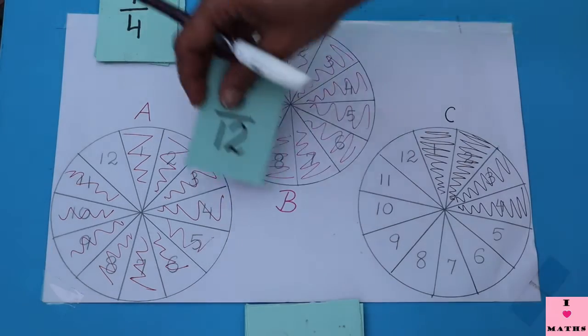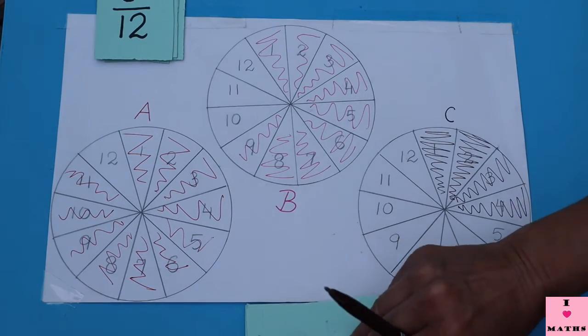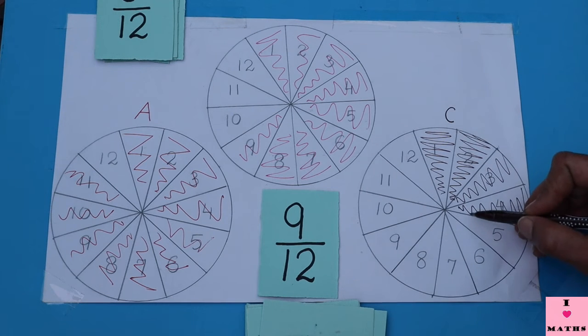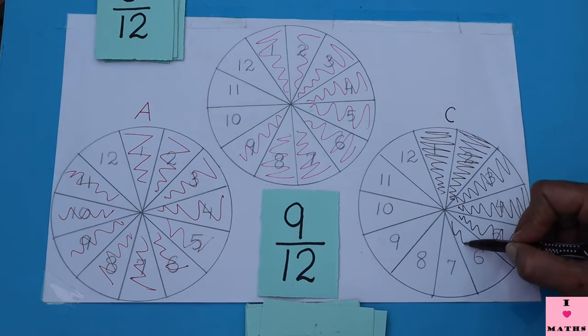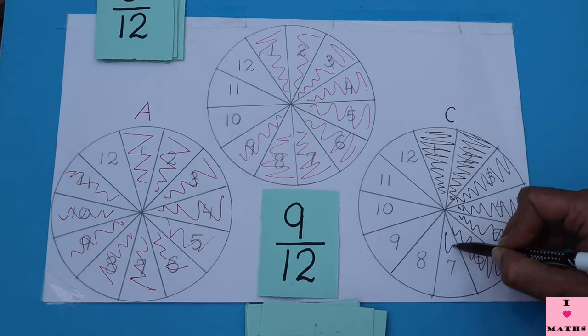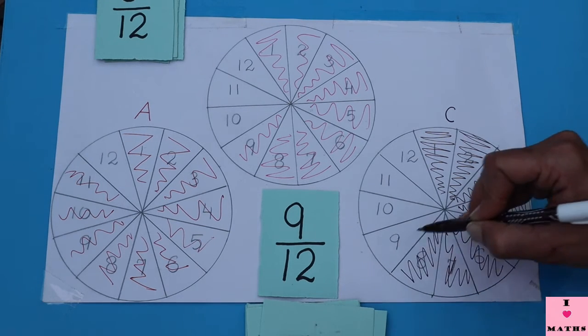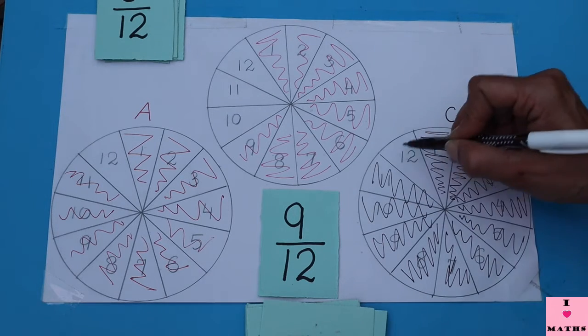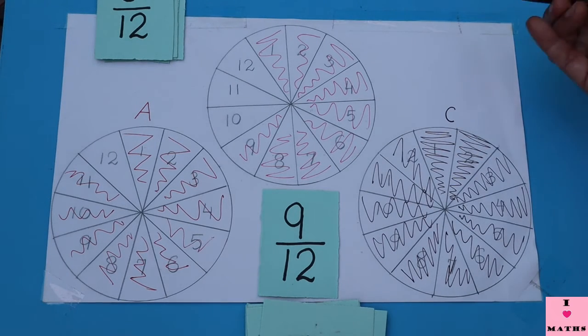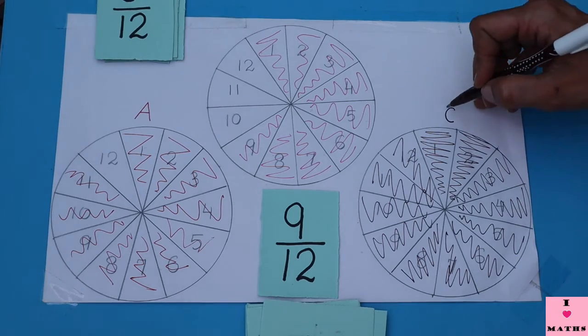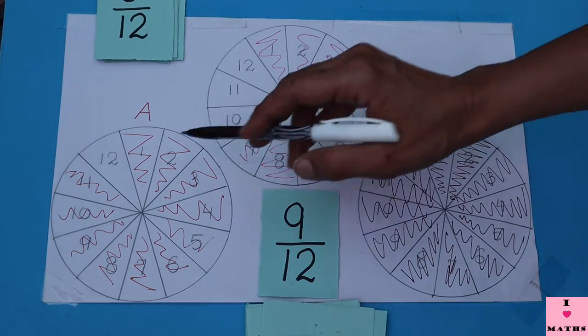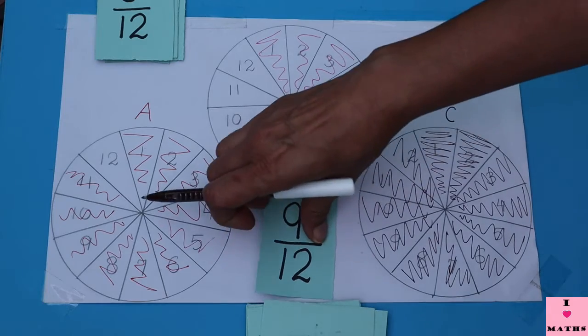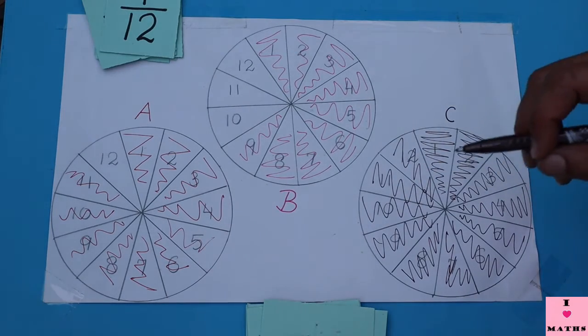Okay, now it is C's turn. Nine out of twelve. Great, so nine parts have to be colored. One, two, three, four, five, six, seven, eight, and the ninth part is not there. So children, C has won the game. A is yet to color one part. B is yet to color three parts. So this is how you have to play the game.